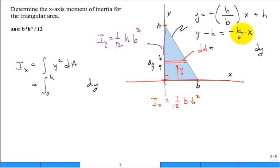And so, I didn't leave enough room here. So that x is equal to b over h times h minus y. Or x is equal to b times 1 minus y over h.